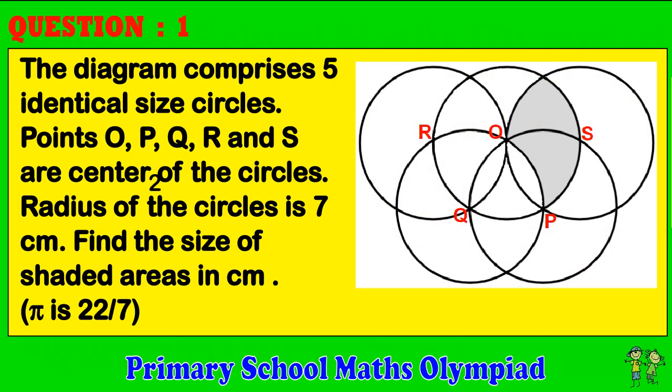Question 1. The diagram comprises five identical size circles. Points O, P, Q, R, and S are the centers of the circles. The radius of the circles is 7 cm. Find the size of the shaded areas in cm². Pi is 22 over 7.